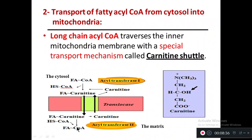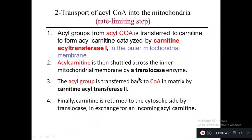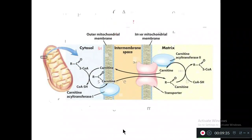Inside the matrix, acyl-carnitine is converted back to acyl-CoA with the help of acyltransferase 2. Finally, the carnitine is returned to the cytosolic side by translocase in exchange for an incoming acyl-carnitine. This completes stage 2 — the entry of acyl-CoA into the mitochondrial matrix.